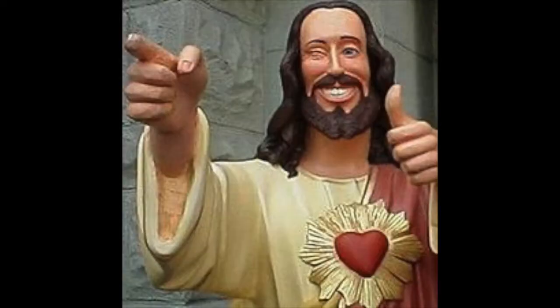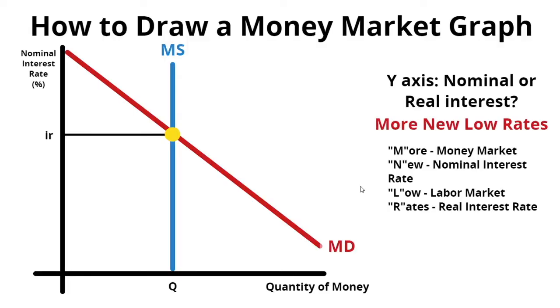Hey you, want a 5 on the AP Econ exam? You're going to want to draw your graphs right. GPA Jesus here, and let's quickly cover how to draw the money market graph to get full points. This is a quick overview without much explanation, so this is how you'll hopefully draw your graph once you reach a GPA Jesus skill level. But let's start from scratch.